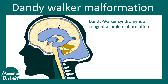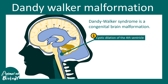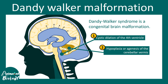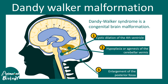First we will talk about Dandy-Walker malformation, which is a congenital brain malformation where there is a cystic dilation of the fourth ventricle, hypoplasia and agenesis of the cerebellar vermis, and most importantly enlargement of the posterior fossa. So the back of the head is bulged out.